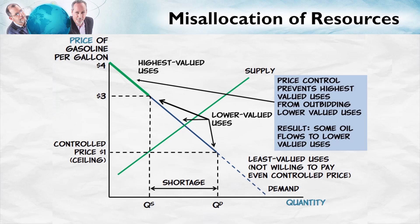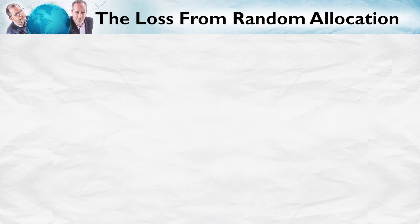These high-valued uses or users will not be able to outbid the lower-valued uses because the price is limited to $1. By the way, these lower valued uses aren't even willing to pay the controlled price, so they won't get any oil at all — which is a good thing, because they have very low valued uses. On the other hand, the high valued uses are not going to be able to outbid these lower-valued uses, so some of the oil is going to be misallocated. It's going to go to low valued uses even when there's not enough to satisfy all of the highest valued uses. The most important point is that with price controls, prices no longer serve their signaling and incentive function, and as a result we get the misallocation of resources. Resources no longer flow from their low valued uses to their high valued uses, and we get less value from our resources.